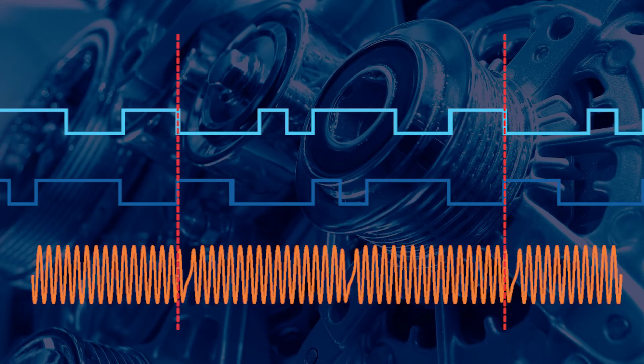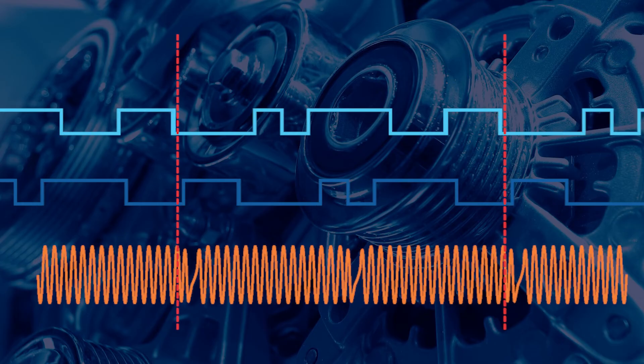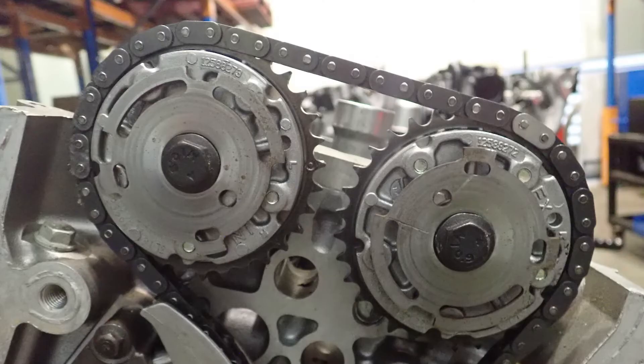If the patterns align correctly, then the timing chains or belts could be okay. If they do not align, you can be confident that there are worn or damaged parts in the camshaft drive or variable valve timing system, which will require physical inspection.